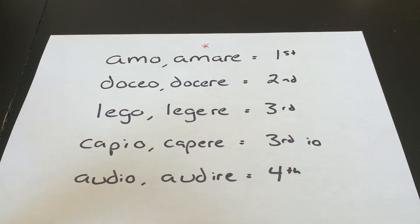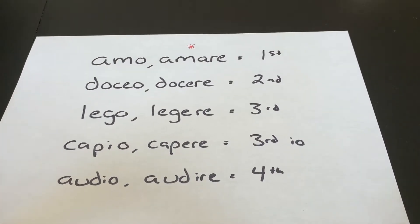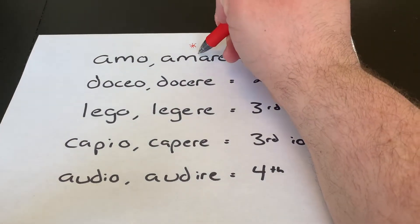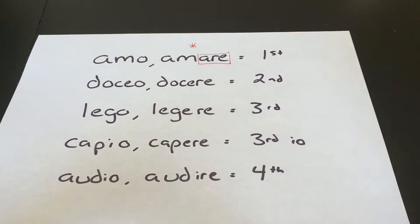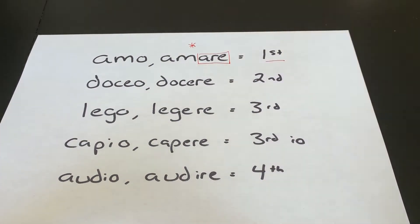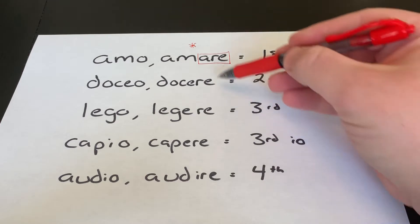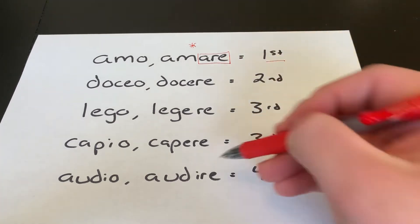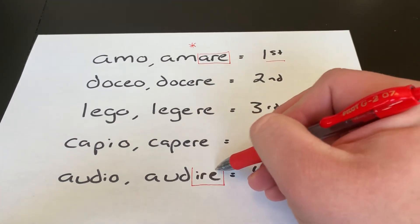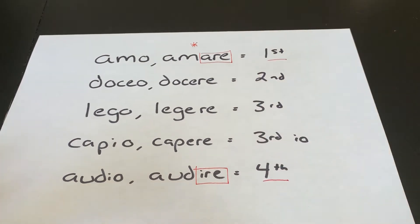For now ignore that first word and just look at the second principal part. If you see ARE in the second principal part, that means it's first conjugation. Second, third, and third IO are a little tricky — we'll come back to those — but the other easy one is if you see IRE, that tells you it is a fourth conjugation verb.